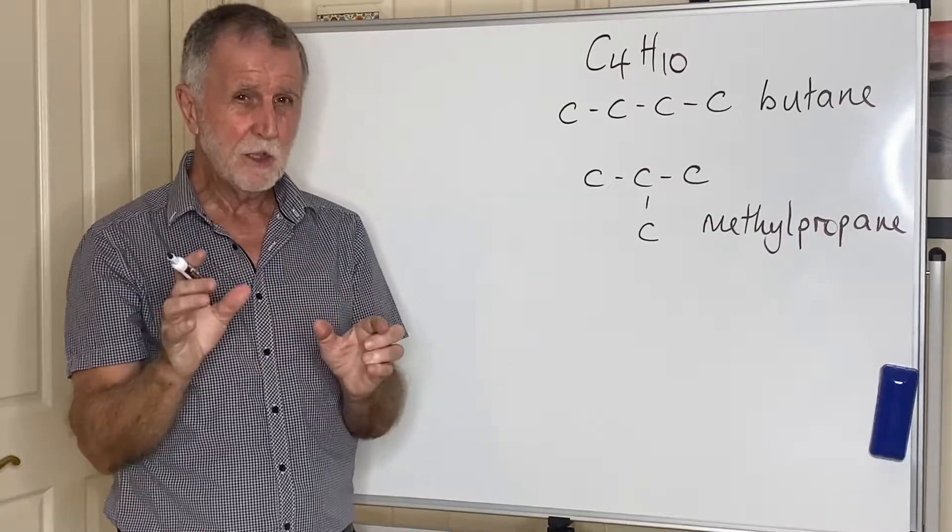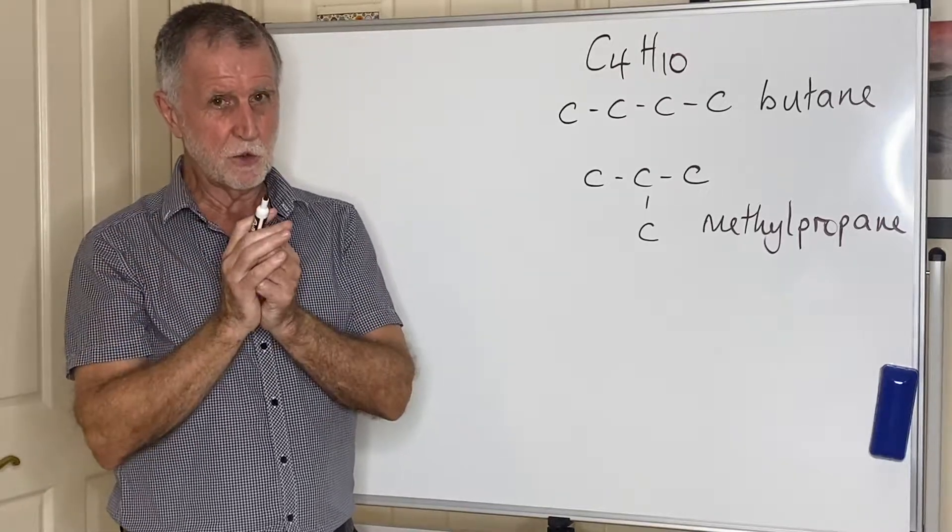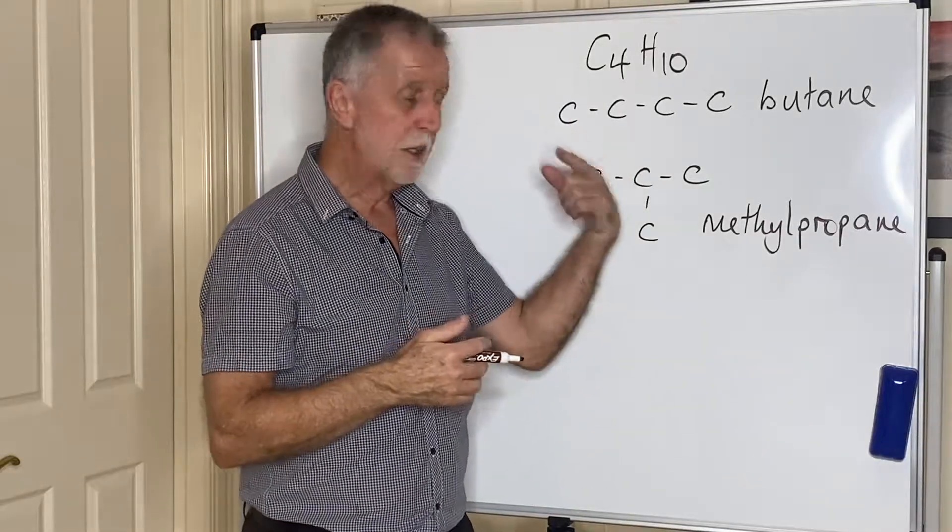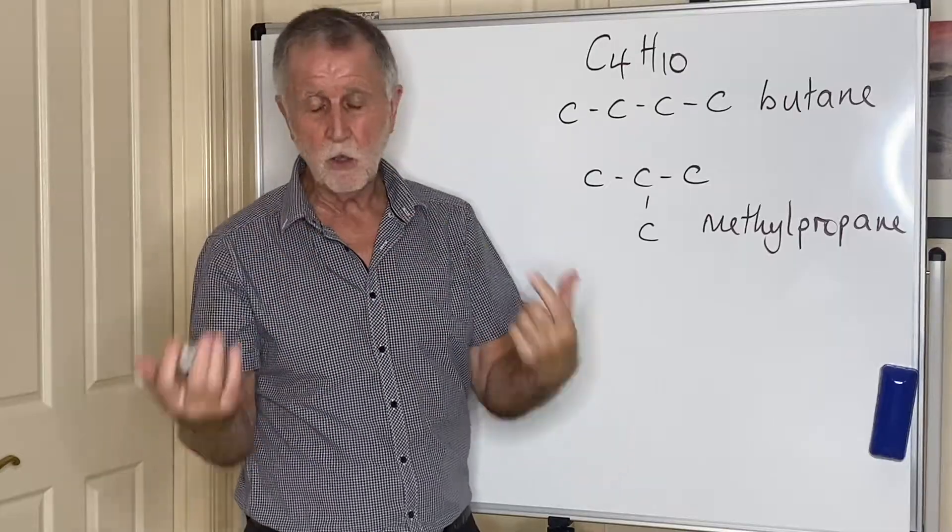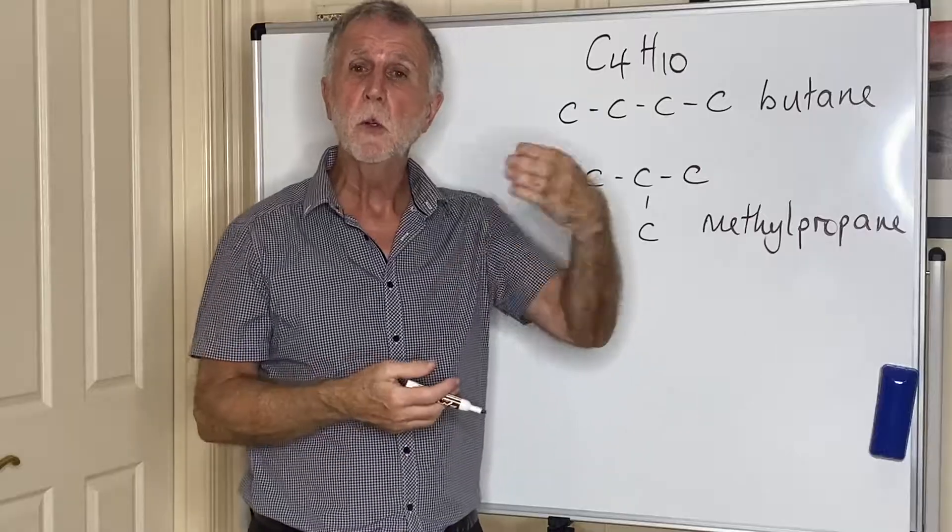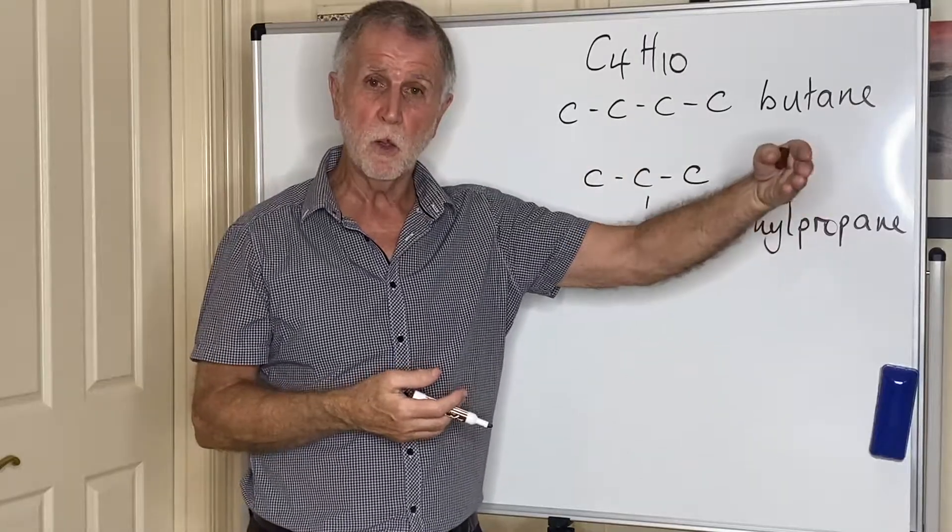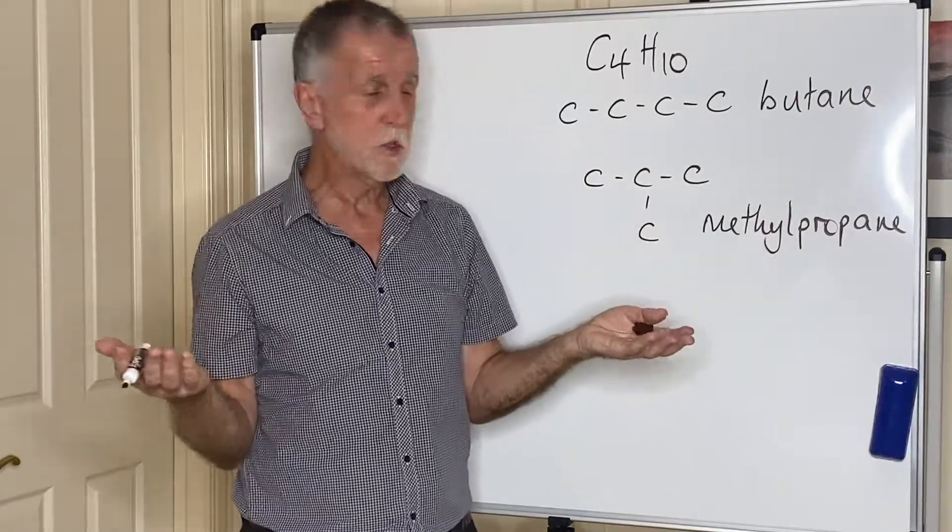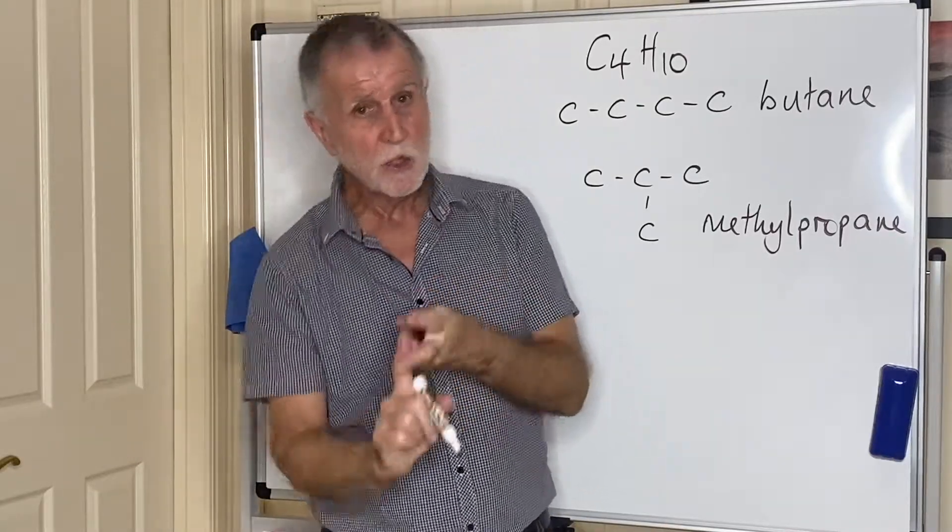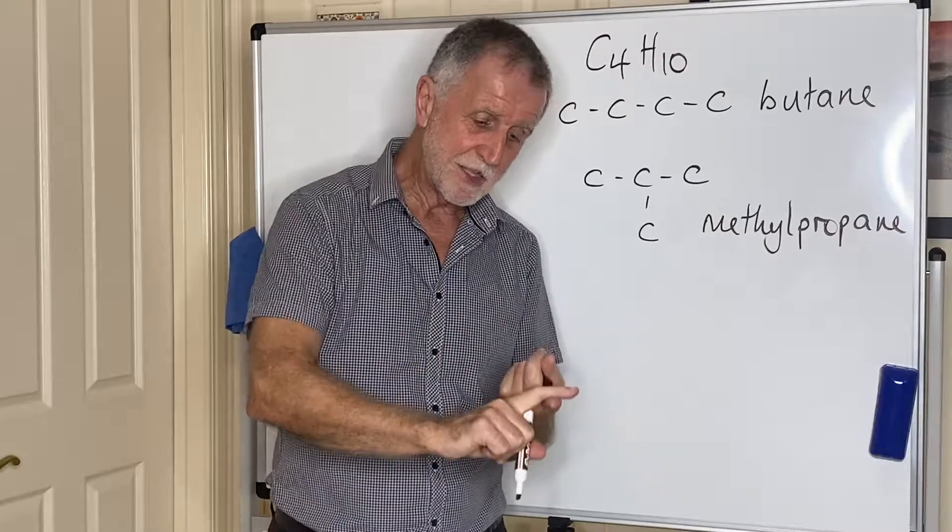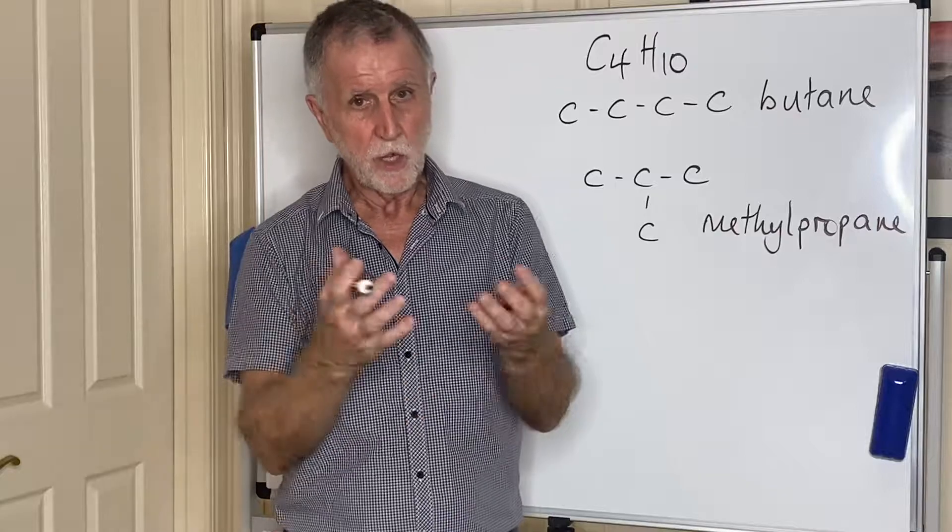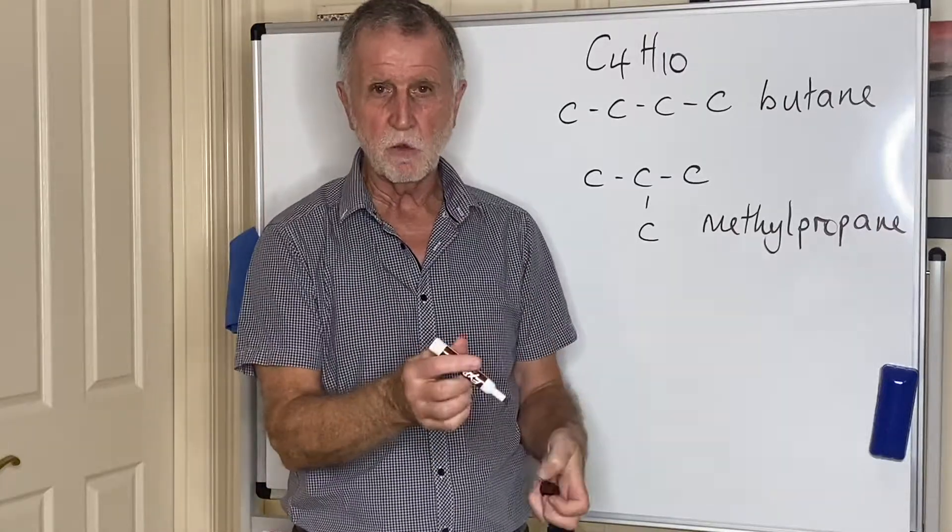Isomers will be found in all of the different types of functional groups: the alkenes, the alkynes, the halo alkanes, the alcohols and so on. We mentioned some of them, we said you could have like butan-1-ol, butan-2-ol, those would be isomers. You will also get aldehydes can have isomeric ketones, carboxylic acids can have isomeric esters.